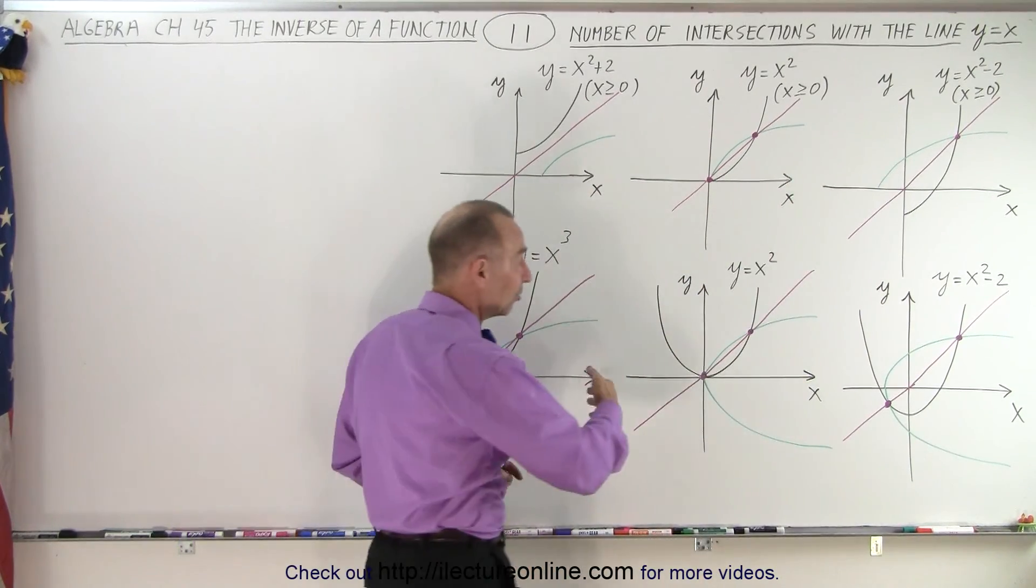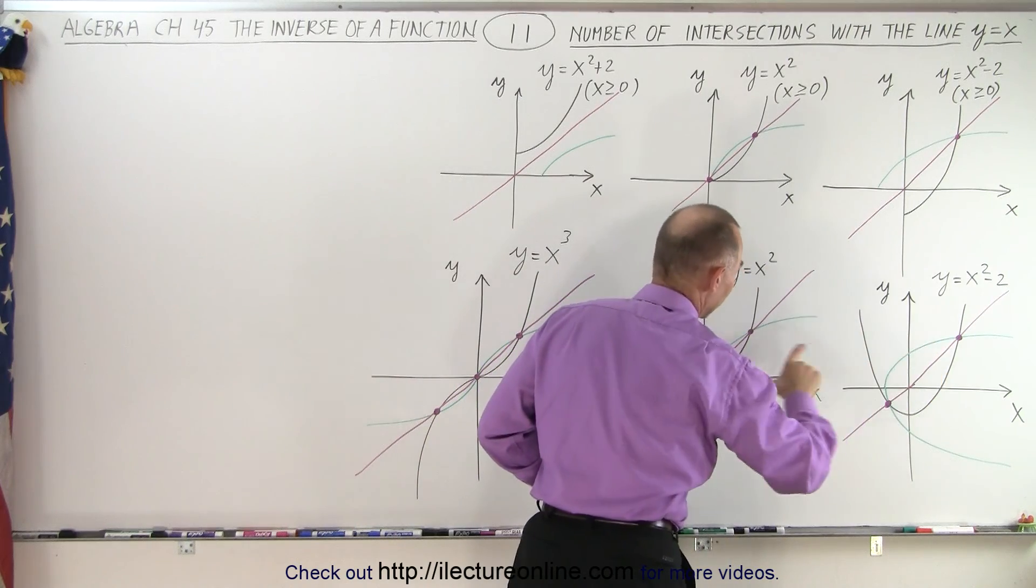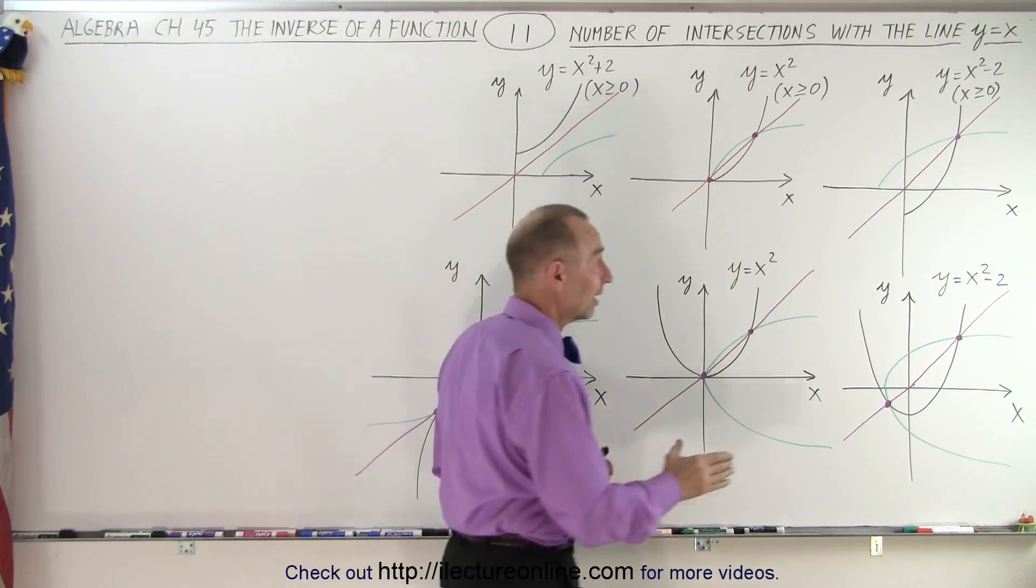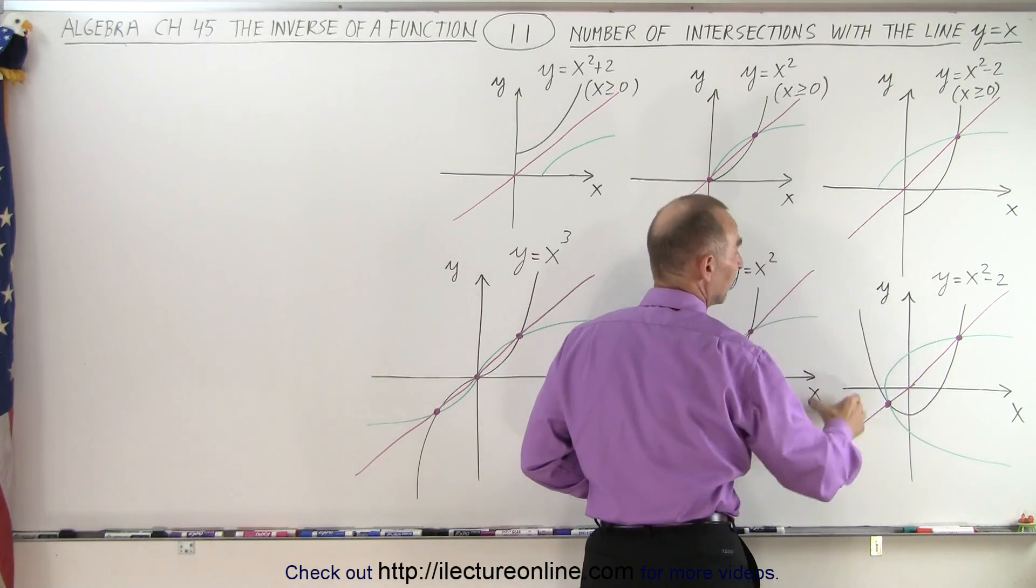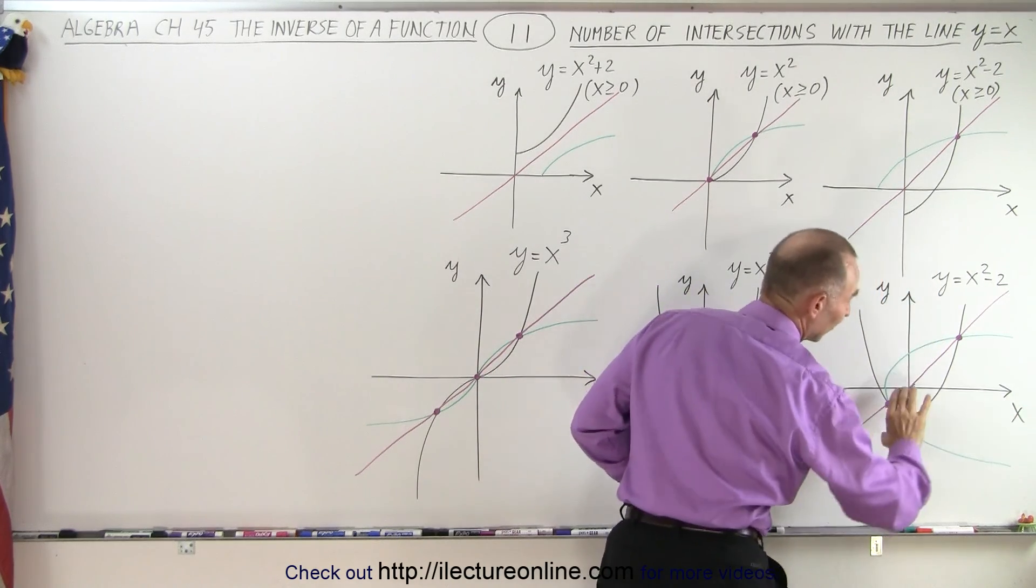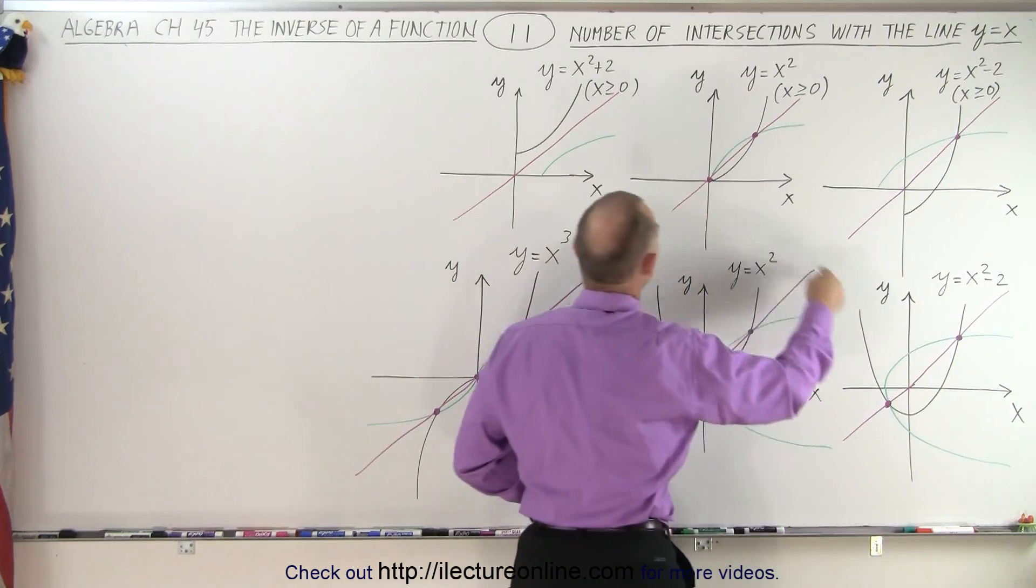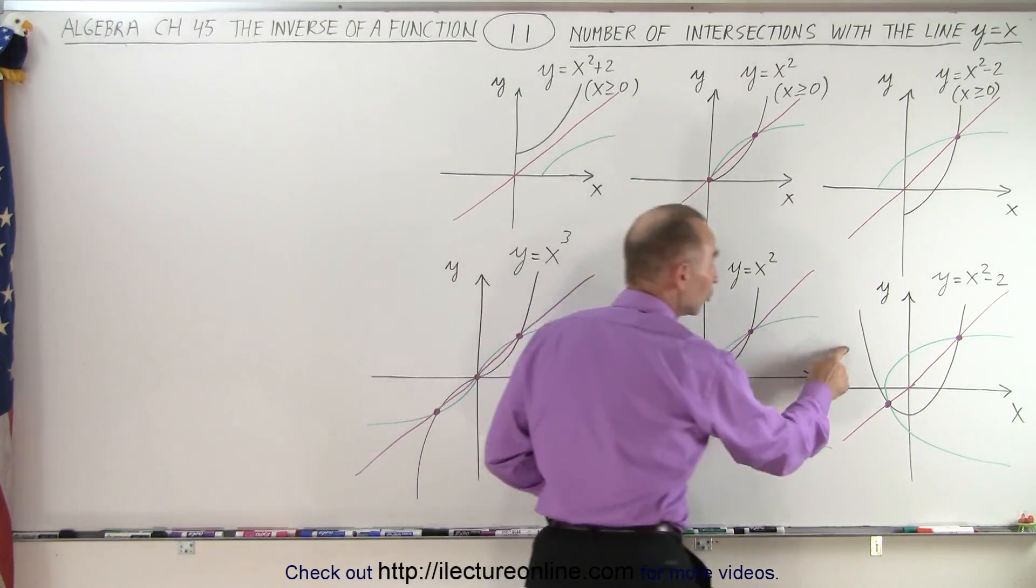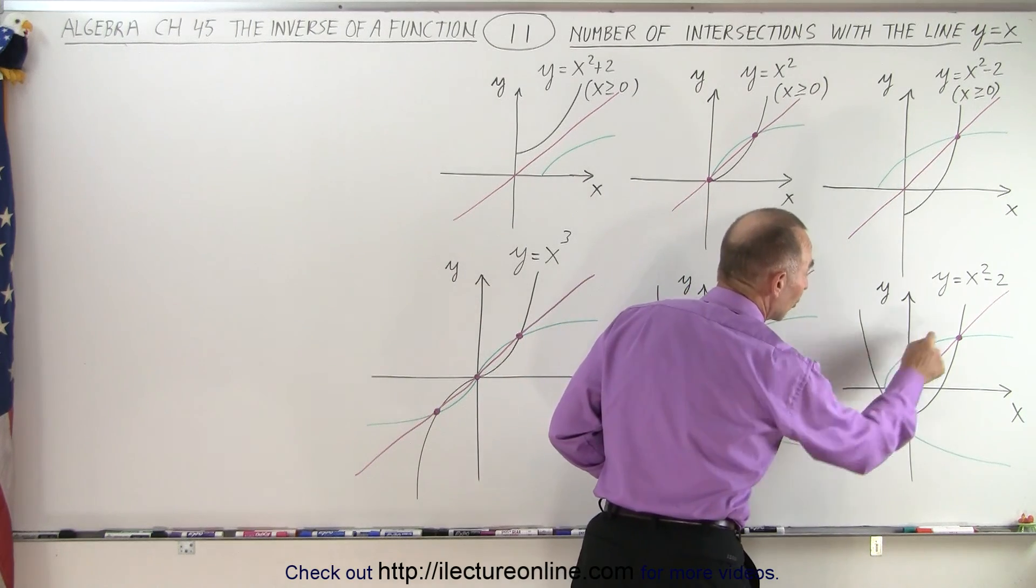Now you can see that in these particular cases, they cross the line twice because we have a quadratic equation. Now it turns out that if I take this function and move it far enough upward so that the inverse will be far enough this way, then again, just like we have in this example, there would be no places where the function or the inverse would cross the y equals x line.